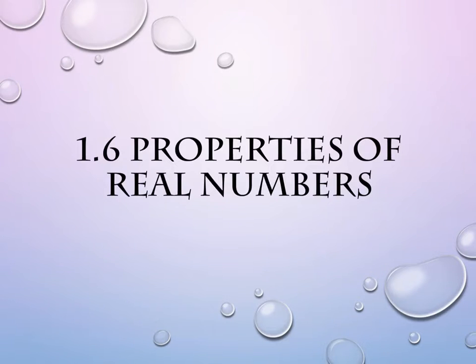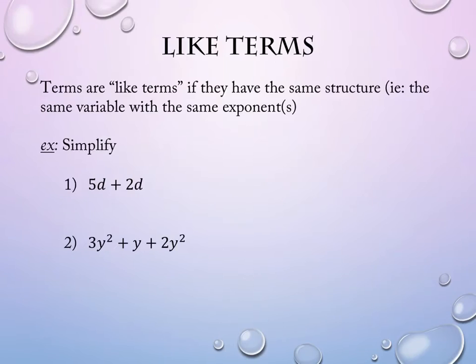Section 1.6 is properties of real numbers, and we are going to start right in with a definition. The definition we're talking about first is the phrase 'like terms.' Terms are considered like terms if they have the same structure — the same variable with the same exponent.